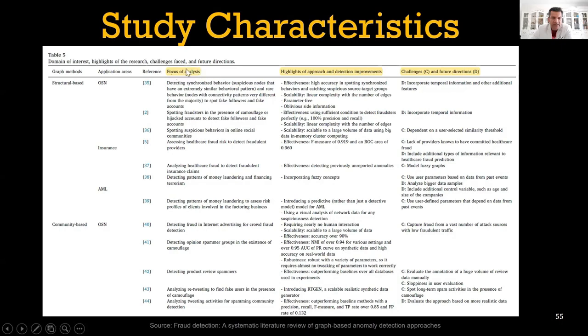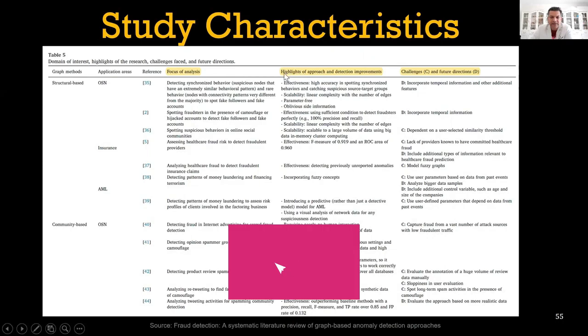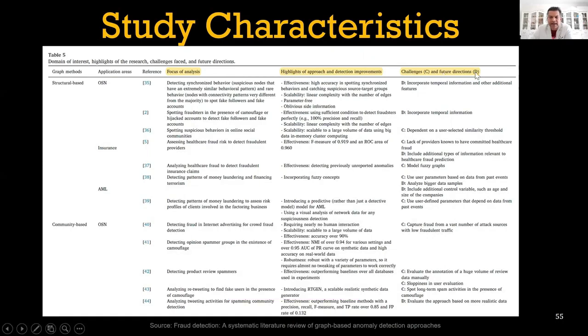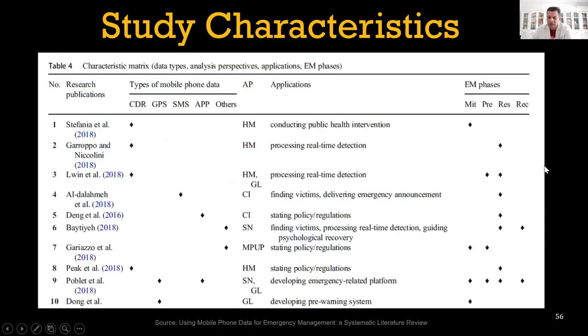This table talks about domain of interest highlights, application areas, the reference, focus of analysis, what has been their main interest or focus area, what were the highlights of this specific approach, and what are the challenges and future directions. Future direction is shown using a D and challenges is shown using a C. If you want to incorporate two or three different elements in one table, this is a good idea that you can apply as well.